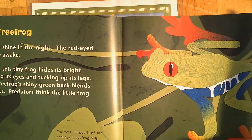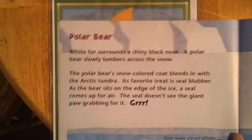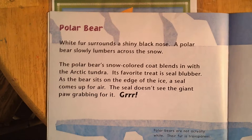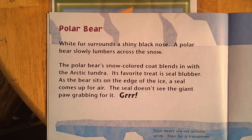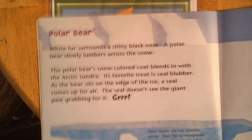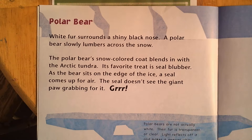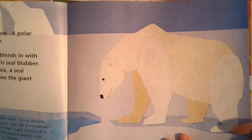Let's see — polar bear! White fur surrounds a shiny black nose. A polar bear slowly lumbers across the snow. The polar bear's snow-colored coat blends in with the arctic tundra. Its favorite treat is seal blubber. As the bear sits on the edge of the ice, a seal comes up for air — the seal doesn't see the giant paw grabbing for it. Polar bears are not actually white; their fur is transparent, and light reflects off it making it appear white or yellowish. So what does the color of a polar bear do? It helps it blend in so it can hunt easier.